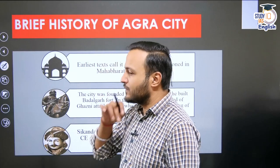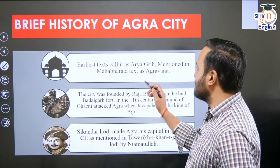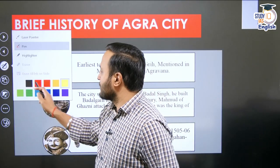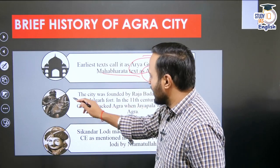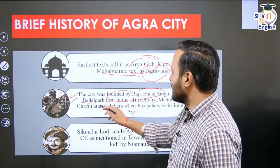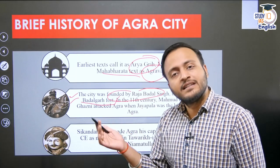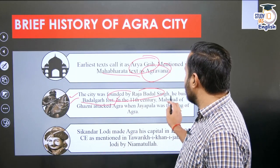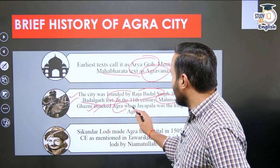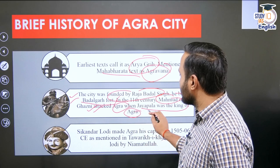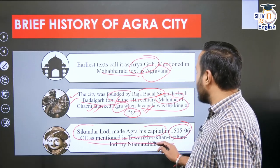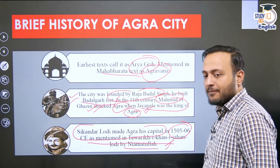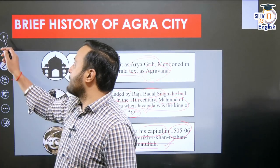The earliest mention of Agra appears in Vedic literature, where it is called 'Aryagrih,' and in the Mahabharata as 'Agra-vana.' During the Rajput period, it was founded by Raja Badal Singh, who built Badalgarh Fort, probably on the same site as the present Agra Fort. Later, Mahmud of Ghazni attacked Agra when Jaipal was its king. Sikandar Lodhi formally made Agra his capital around 1505–1506, as documented in the Tawarikh-e-Khan-e-Zahan Lodhi by Niyamatullah.